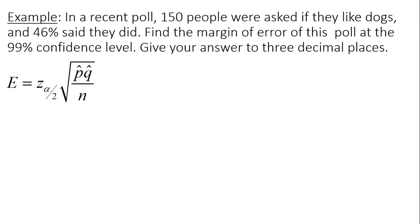So my formula for my error bound is error bound equals your critical value times the square root of p hat times q hat divided by n.